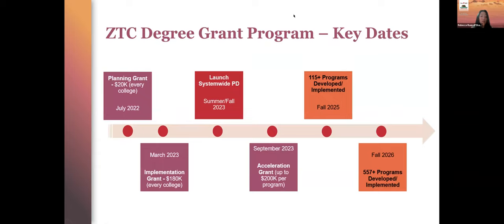Here are some key dates for the ZTC degree program. The chancellor's office is taking a phased approach to facilitate two goals: building a foundational ZTC capability system-wide, and accelerating the development of ZTC degree programs by colleges or early adopters of ZTC strategies. To that end, we have provided $200,000 to each college—the planning grant and the implementation grant totaling $200,000 per college. In return, we're expecting each college to develop at least one program. It is important that every college begins to plan and think about what it means to engage in ZTC strategy. This is not optional from our perspective, because every student in our system deserves to benefit from this great movement that we are creating.